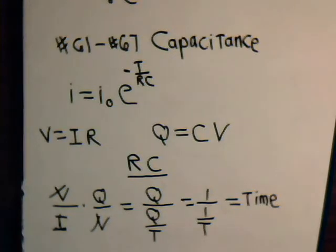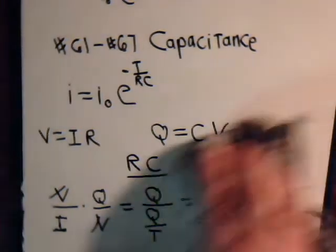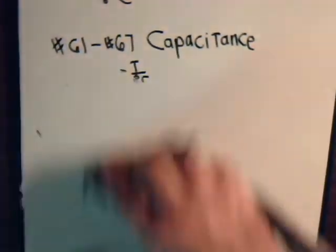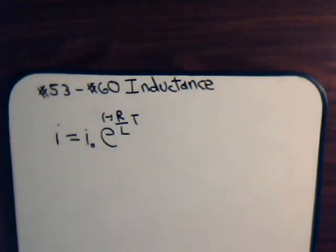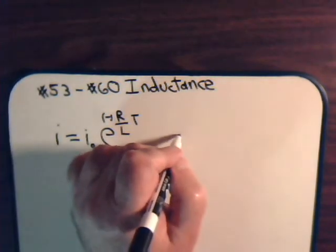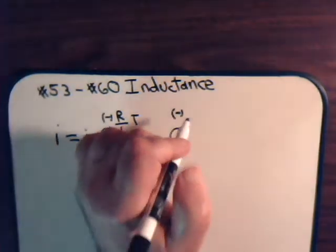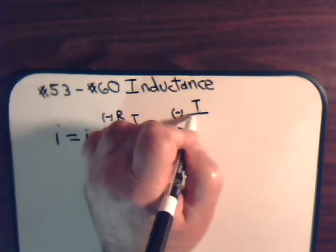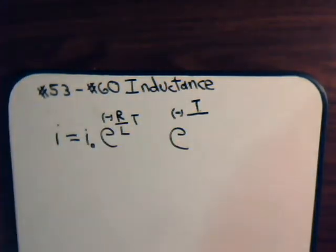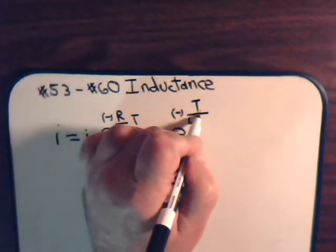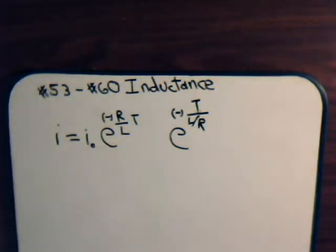Now, what about with inductance? Here we have one of our equations that we had derived earlier. Or this part, we could express it as e to the minus, then we have T divided by L divided by R.